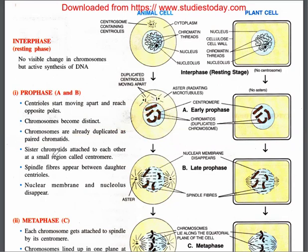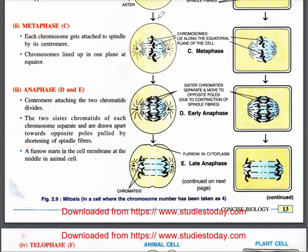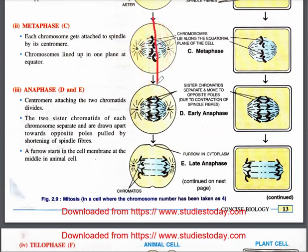Spindle fibers appear between the poles. In metaphase, each chromosome gets attached to the spindle fiber by its centromere, and then all chromosomes line up in one plane at the equator — a straight line — with the two centrioles at the two different poles.